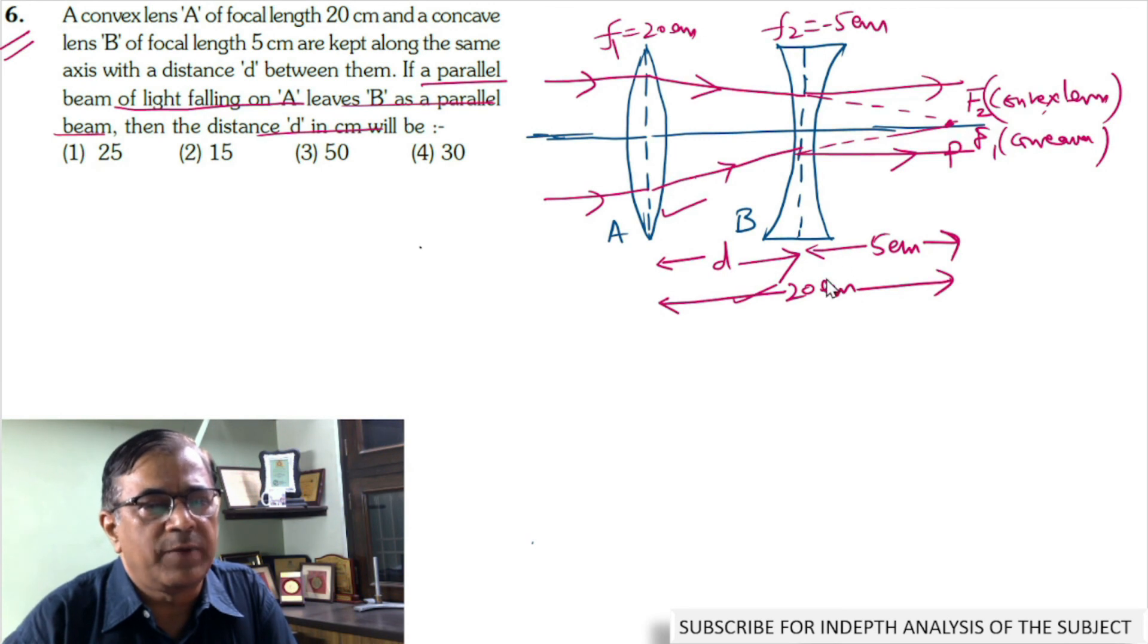From the figure, we should be able to conclude that D plus 5 equals to 20 cm, and this implies that D equals 15 cm.